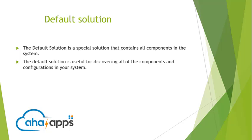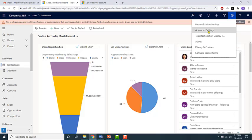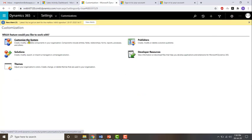In this video we'll look at what is a default solution. The default solution is the solution which contains all the components in the system. So if you want to discover what are the components and configurations in your system, you just need to look at the default solution. To access the default solution, click on the gear icon which is the settings, click on advanced settings, click on the down arrow next to settings, then click on customizations and click on customize the system.